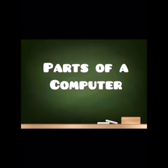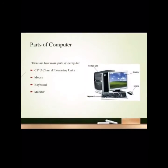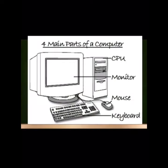Today we are going to see the parts of a computer, our third unit. Just like we have parts of the body — head, neck, forehead, mouth, hand, legs — all having different functions, a computer also has different parts. The 4 main parts of computer are CPU, mouse, keyboard, and monitor. You can see the picture of CPU, monitor, mouse, and keyboard here.